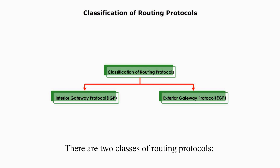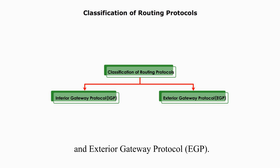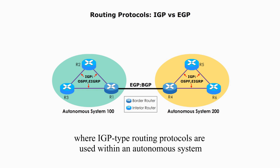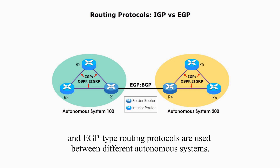There are two classes or two categories of routing protocols: Interior Gateway Protocol, IGP, and Exterior Gateway Protocol, EGP. IGP and EGP are different in terms of autonomous systems, where IGP-type routing protocols are used within the autonomous system, and EGP-type routing protocols are used between different autonomous systems.